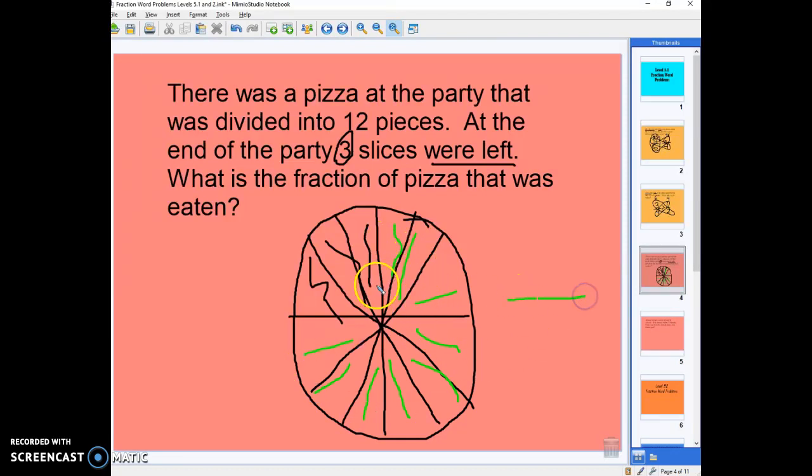So, I'm going to write my fraction here. I have twelve pieces total, and I've got one, two, three, four, five, six, seven, eight, nine pieces that were eaten. So, nine twelfths of the pizza was eaten.